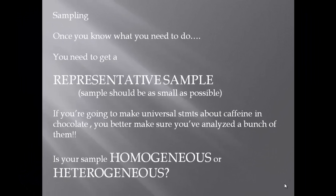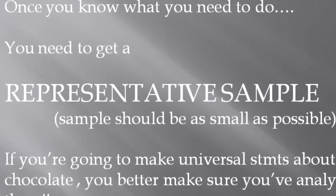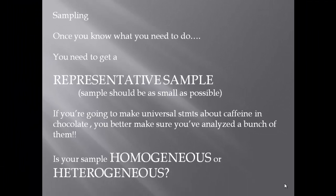So once you know what you need to do, the next step is to get a sample. The most important thing here is that your sample must be representative of your entire batch. Okay, because if you're going to start making universal statements about how much caffeine is in chocolate, you better make sure that what you're publishing is correct. You don't want your data to be criticized by the scientific community. What the students did in the book is they went to their neighborhood store and they bought a bunch of different chocolate bars. And of course, they're going to analyze each of them. And you have to analyze each chocolate bar several times because you want to make sure that the caffeine content in that one chocolate bar is the same throughout that one chocolate bar. And of course, then they would compare all of the different chocolate bars at the end.